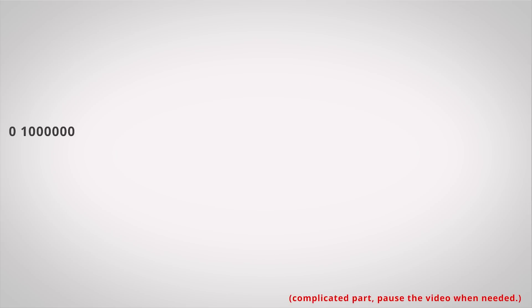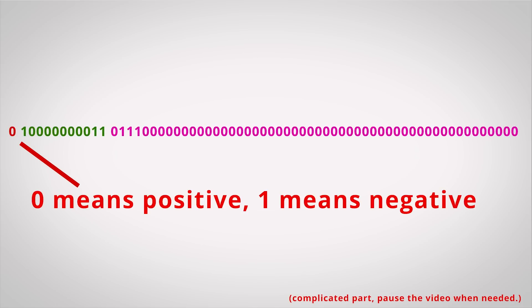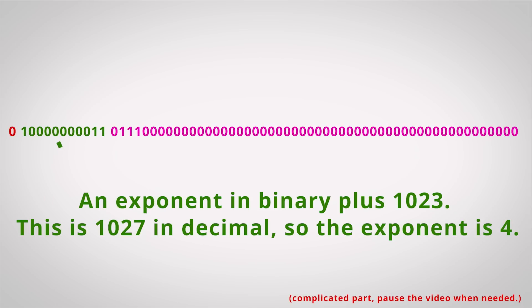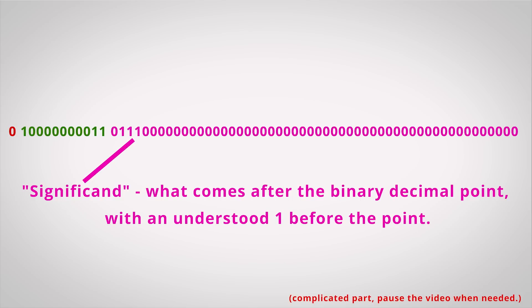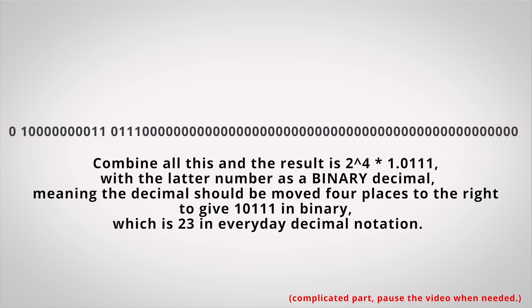It matters because computers only have a finite amount of space to store the numbers that they work with. For a single number, this is typically either 32 or 64 bits, depending on what processor and program you're using. So in order to express a range of very large and very small numbers, some of these bits are allocated to storing the digits of the number itself, while others are reserved to specify where the decimal point should be — a little bit like scientific notation.